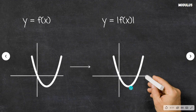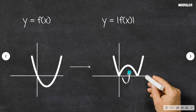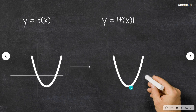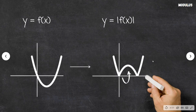That will effectively take this section of the graph and flip it upwards like so. We don't have any negative values of f of x for the modulus of f of x.